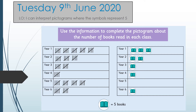If we look at the tally for Year 1 and count up in fives: 5, 10, 15, 20, 25. But on the pictogram it only shows three lots of five, so that's 5, 10, 15. We need to add another two lots of five to complete that line of the pictogram.